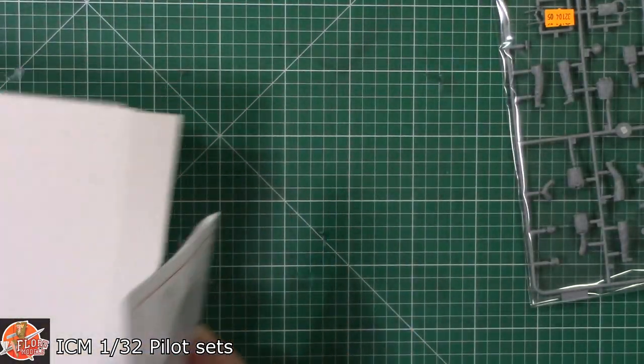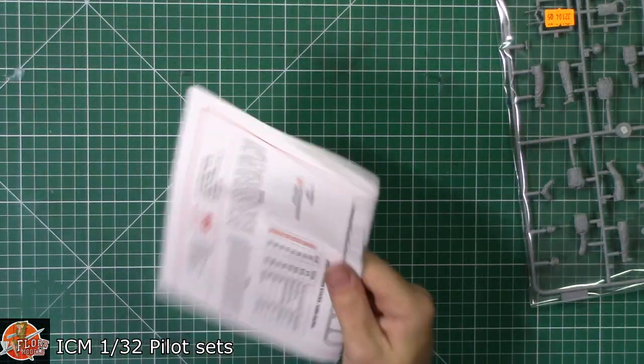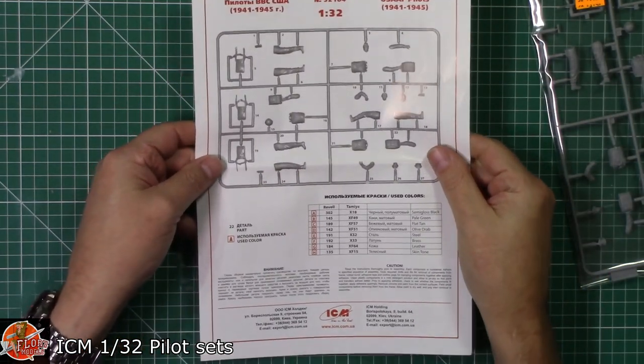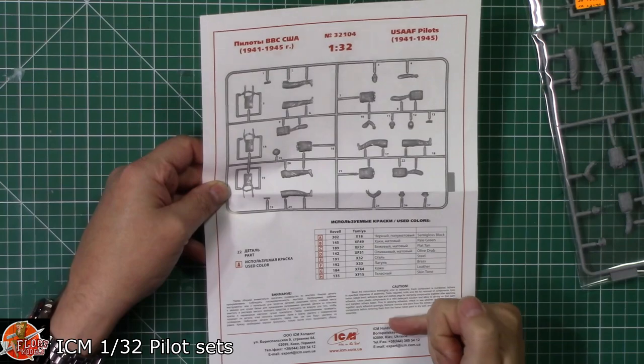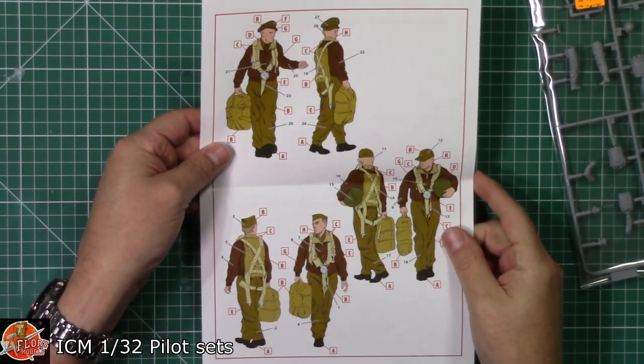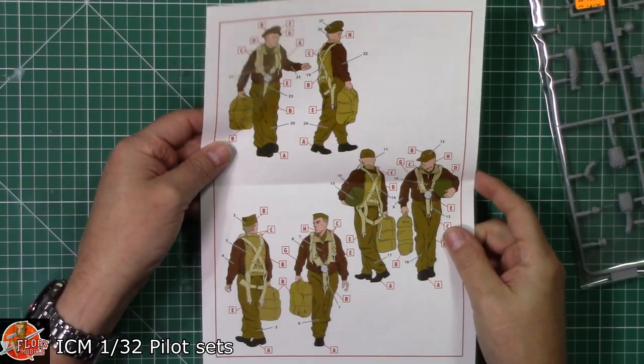So in box one, there's not a lot to these. That's why we thought we'd whip through. You literally just get one little instruction sheet with the part callout and all the rest of it, and then obviously a color callout for the actual diagram, the painting guide.